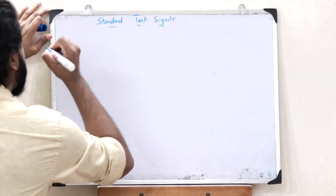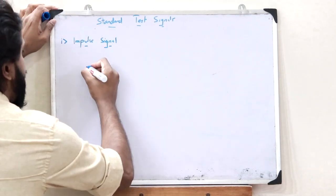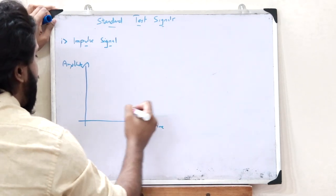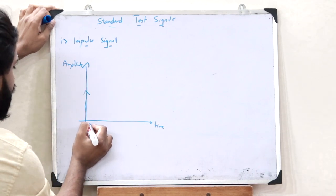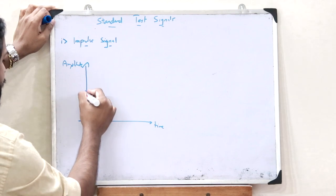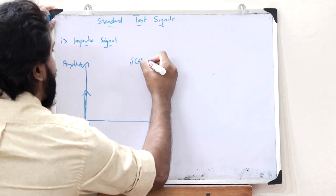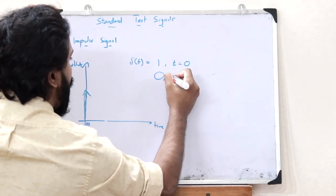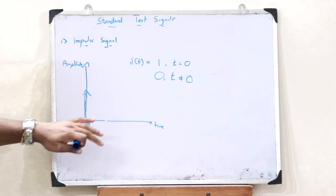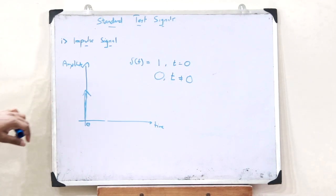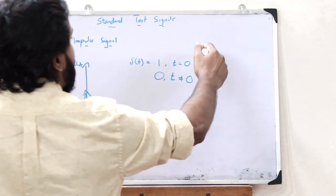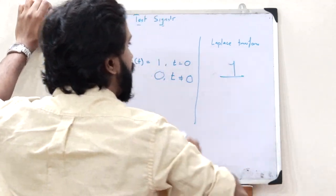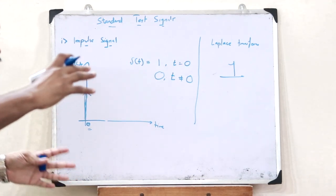The first standard test signal is an impulse signal. If we draw a graph with amplitude on one axis and time on the other, an impulse signal would look like a spike at time zero. An impulse signal has a value of 1 when t equals 0, and a value of 0 when t is not equal to 0. That is, an impulse signal has amplitude only when time equals 0. Taking the Laplace transform of this impulse signal, we get the value as 1.